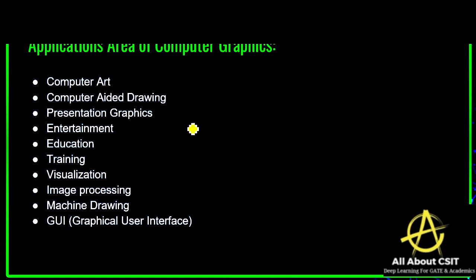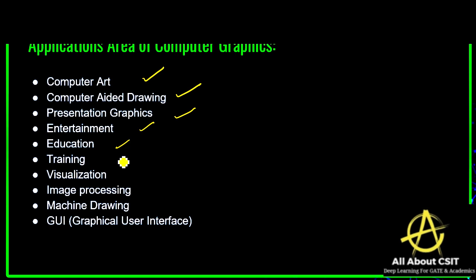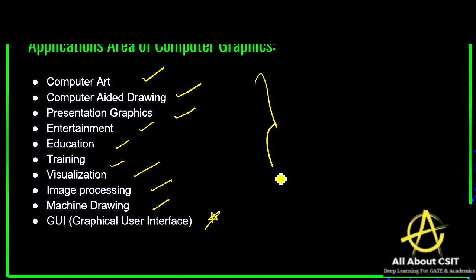Now let's look at the application areas of computer graphics. Computer graphics are used in the areas of computer art, computer-aided drawing, presentation graphics, entertainment, education, training environment, visualization, image processing, machine drawing, and the graphical user interface. Let's look at each application in detail with an example.